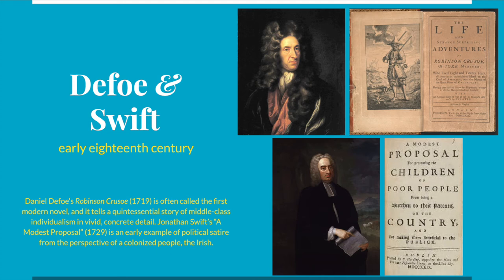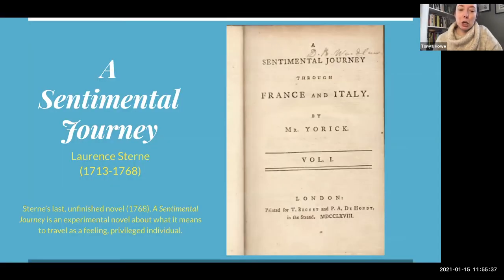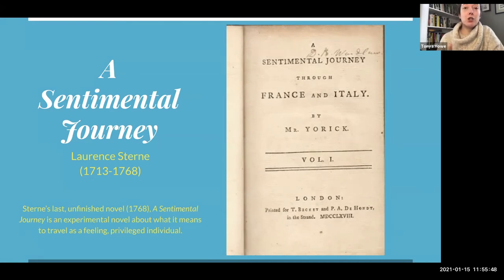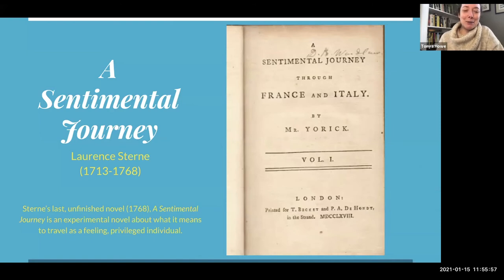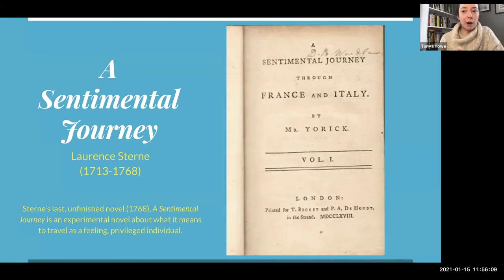We're also going to be reading a later 18th century novel called A Sentimental Journey. This is Laurence Sterne's very last novel — kind of like Shakespeare's The Tempest was his last play. It's actually unfinished; he envisioned two more volumes but we only have the first two. This is a very experimental novel about what it means to travel as a feeling, privileged individual. It's a very short novel and is going to be the subject of one of our major team collaborative projects during the term.